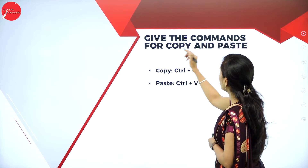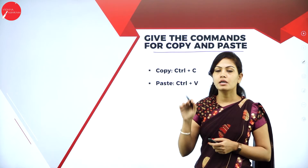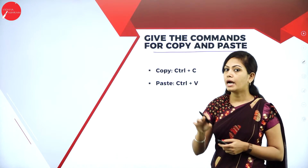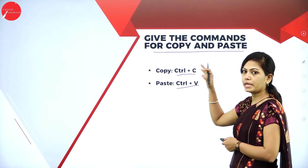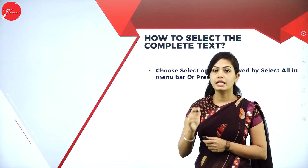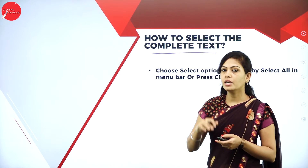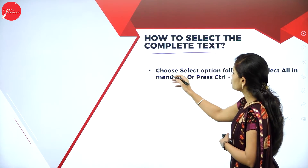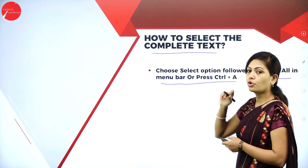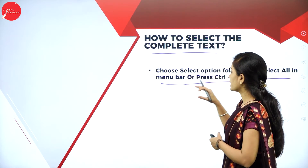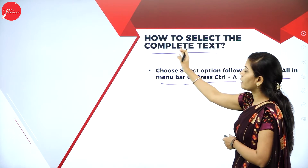Next: the commands for copy and paste. For copying text, use Ctrl+C. For paste, use Ctrl+V. Next, how to select the complete text — if you want to select the entire document, choose the Select option followed by Select All in the menu bar, or press Ctrl+A. Ctrl+A selects the entire document.